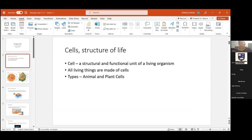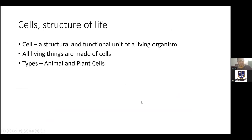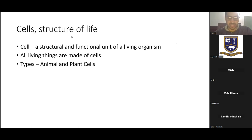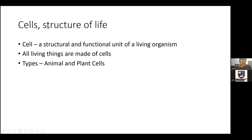As you guys already know, we have two types of cells. We have animal cells and we have plant cells. I hope you guys can see the screen I am sharing. A cell is a structural and functional unit of a living organism. All living things are made of cells. We have two types: animal and plant cells.